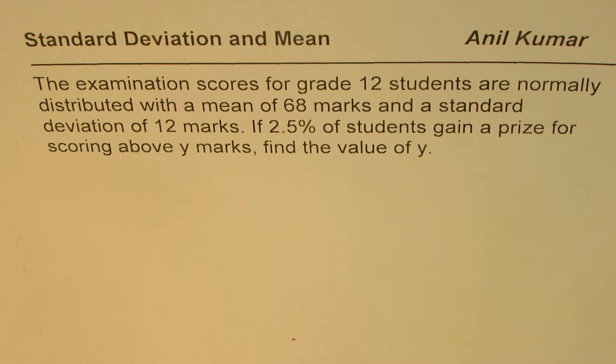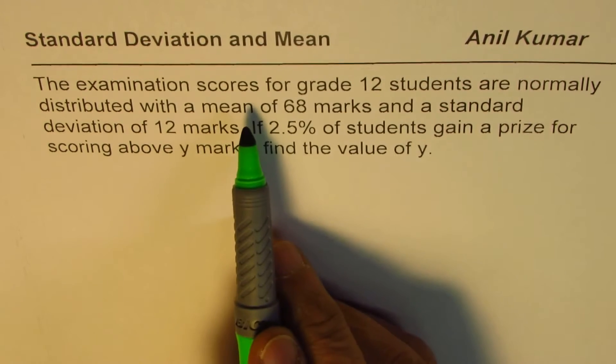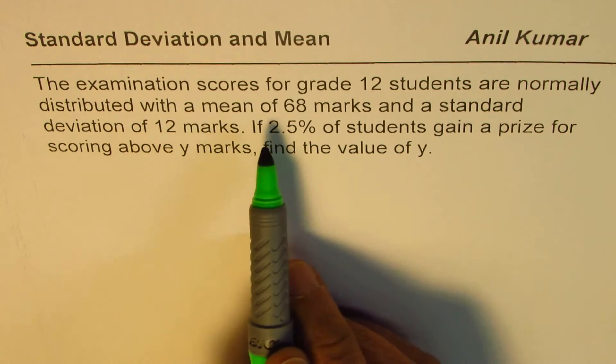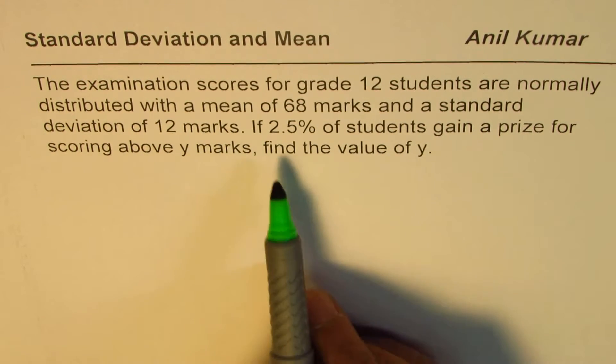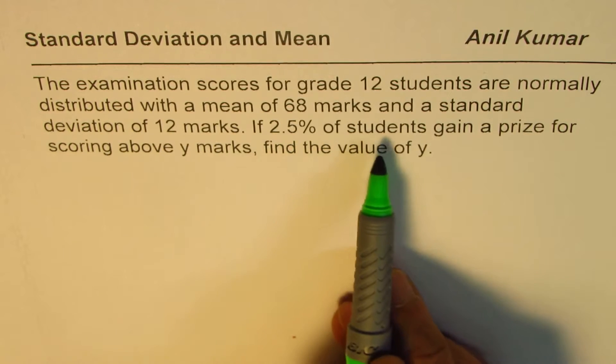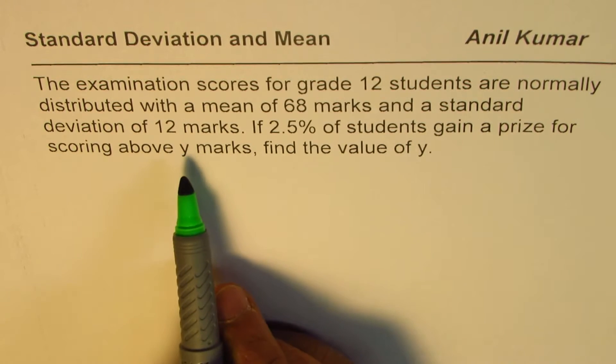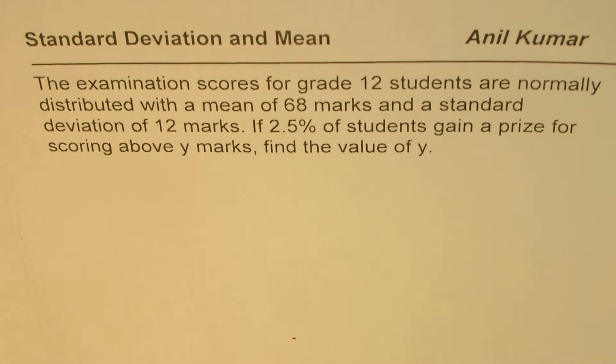The question here is: the examination scores for grade 12 students are normally distributed with a mean of 68 marks and a standard deviation of 12 marks. If 2.5% of students gain a prize for scoring above y marks, find the value of y.